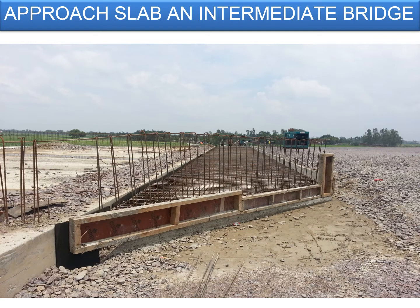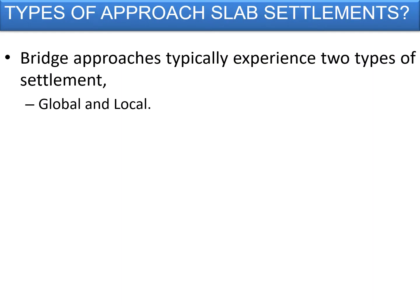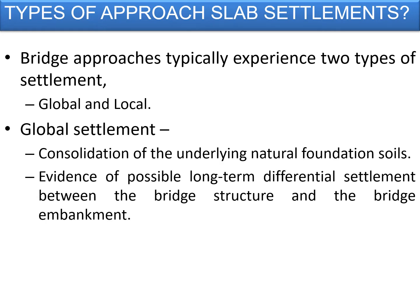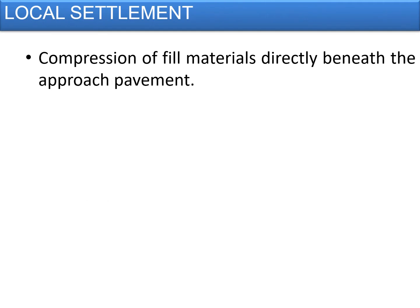Bridge approaches typically experience two types of settlements: global settlement and local settlement. Global settlement is caused by consolidation of the underlying natural foundation soils, or evidence of possible long-term differential settlement between the bridge structure and the bridge embankment fill soil brought up to the road cross section level. Local settlement is compression of fill materials directly beneath the approach pavement.